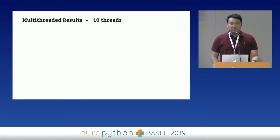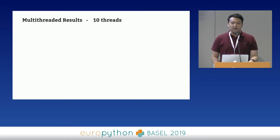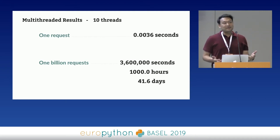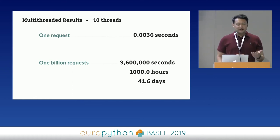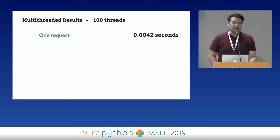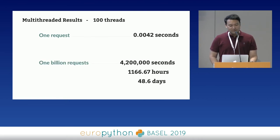We run this with 10 threads — and it turns out it's actually slightly worse: about 3.6 milliseconds, which comes out to about 41.6 days. Maybe bumping up to 100 threads will help? That actually makes things worse — about 4.2 milliseconds per request, coming out to about 48.6 days. So things aren't looking so good.